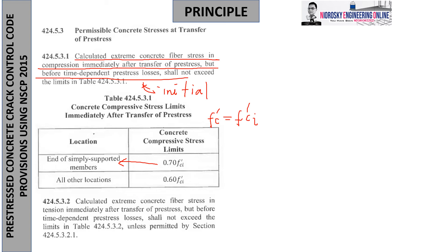For the meantime, we can assume fc' equals fc'i as we calculate, but after accounting for lump sum losses they would not be equal. Under 424.5.3.2, still under the initial state, this code discusses tension rather than compression — that is the key difference between the two codes. Under initial state, both compression and tension limits apply.